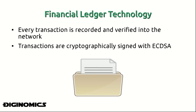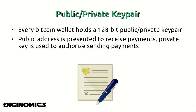Each transaction is cryptographically signed with an elliptical curve digital signature algorithm. The public-private key pair in this exchange is essentially what makes the Bitcoin network so secure. Every Bitcoin wallet holds a 128-bit public-private key pair, and the private key is what digitally signs the transaction for it to take place. If you're familiar with traditional email encryption technologies such as Pretty Good Privacy or PGP, Bitcoin uses a similar mechanism for public-private key pair exchange, except it is applied to the transfer of value.